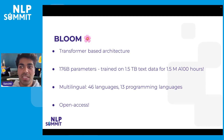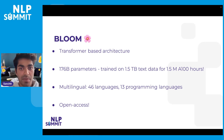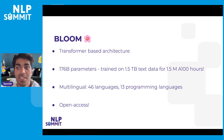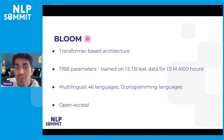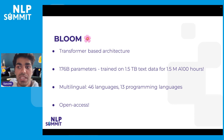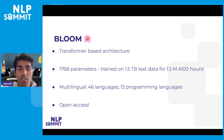BLOOM is a transformer decoder-based architecture, similar to GPT. It has the same number of parameters as GPT-3, or 117 times more than GPT-2, and 1,600 times more than the common BERT base architecture. It's trained on 1.5 terabytes of text data for more than 1.5 million A100 GPU hours. BLOOM is able to generate text in 46 natural languages and 13 programming languages.